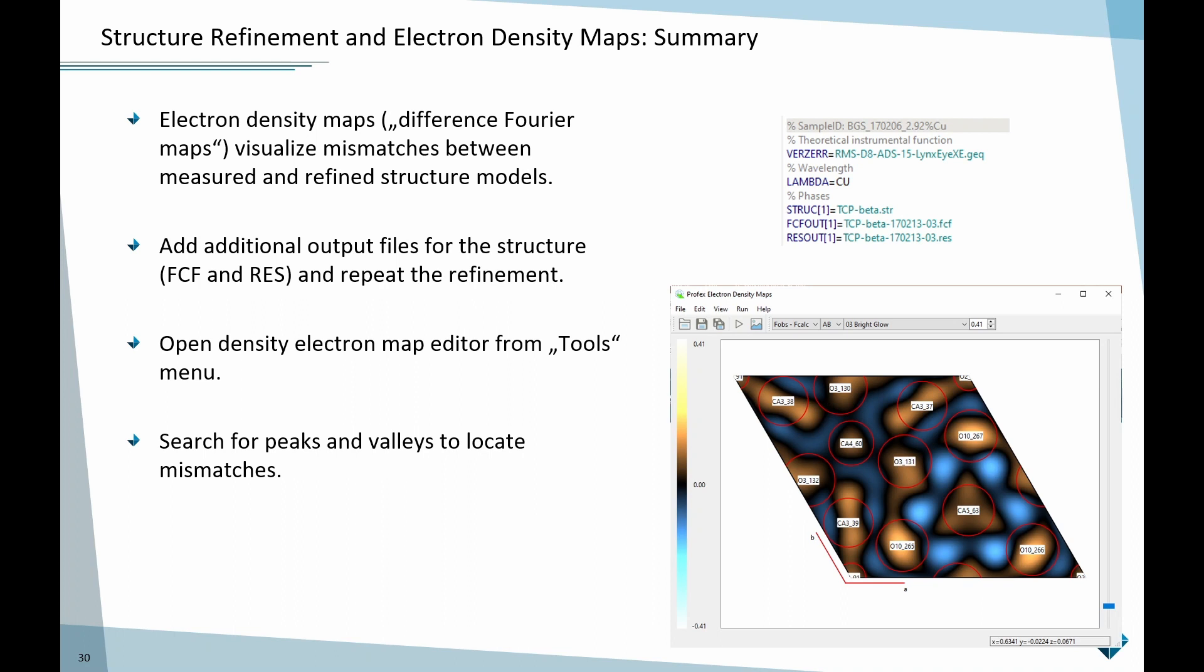To summarize this, electron density maps, especially the difference map, the difference Fourier map between the observed and the calculated structure factors can be used to visualize mismatches in the structure. This will show us where we have to fix the refinement. In order to do that, we need to add these two additional output files to the control file for the structures we want to draw these electron maps.